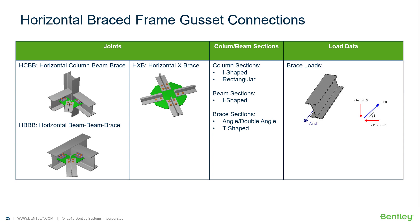In this series of videos we will be focusing our attention on the steel connection design workflow for designing gusset connections for a variety of different horizontal bracing situations, including horizontal column beam brace joints, horizontal beam beam brace joints, and horizontal X brace joints. When creating your joint data for each of these types of joints, it will be important that you specify the appropriate beam, column, and brace sections along with your loading data.